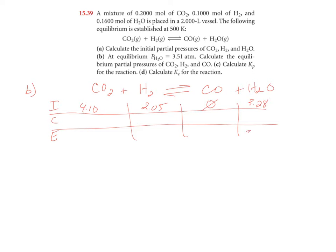We're told in the problem part B that at equilibrium, water vapor is 3.15 in terms of pressure. That's an increase by 0.23 atmospheres. So since they're all in a stoichiometric relationship of one to one, the change is going to be the same for all of them.